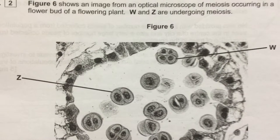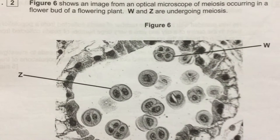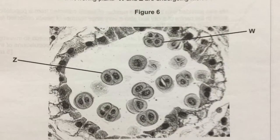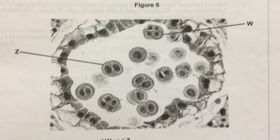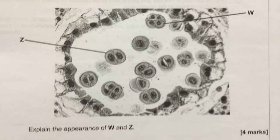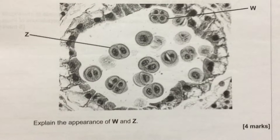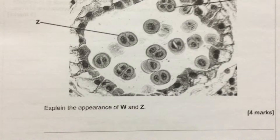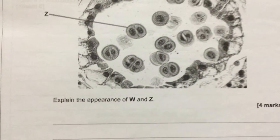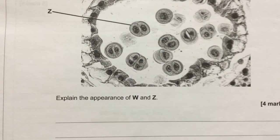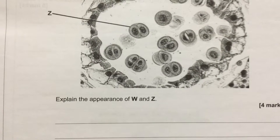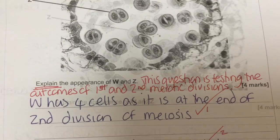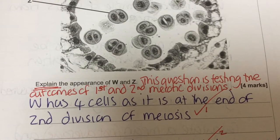Looking at the light optical microscope image, we can see that W is a cluster of four cells and Z is a cluster of two. This question is not asking us to describe those clusters but to explain them — in other words, it's testing what the outcomes of the first and second meiotic divisions are. Remembering that meiosis is a two-stage process: the first stage produces two cells and the second stage produces four.